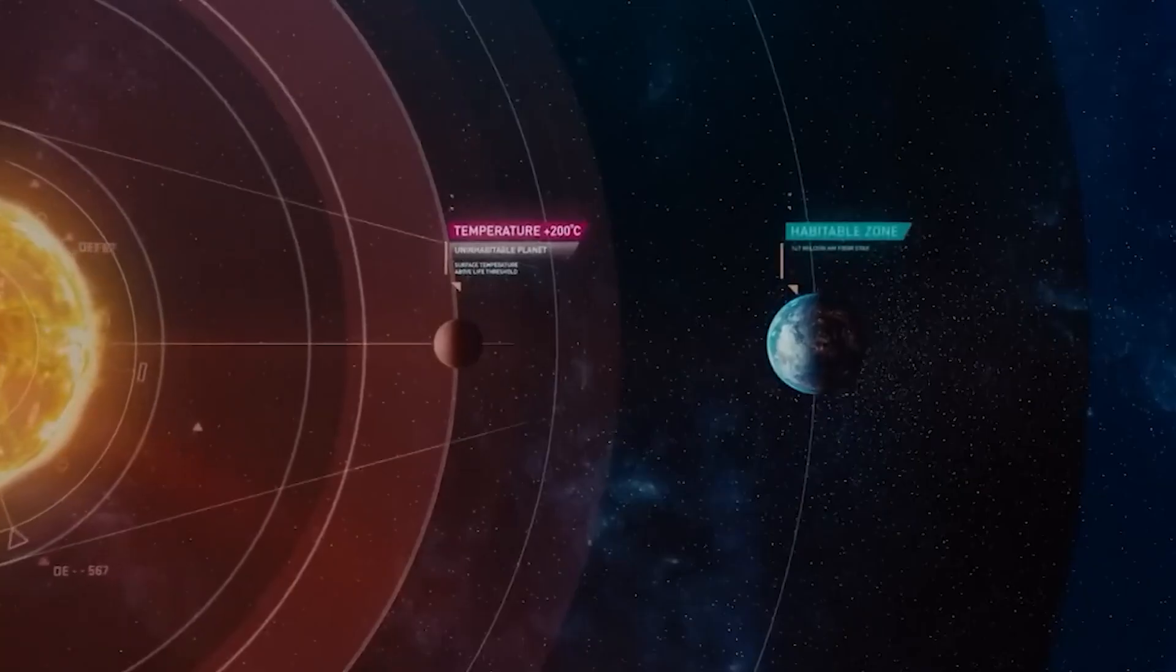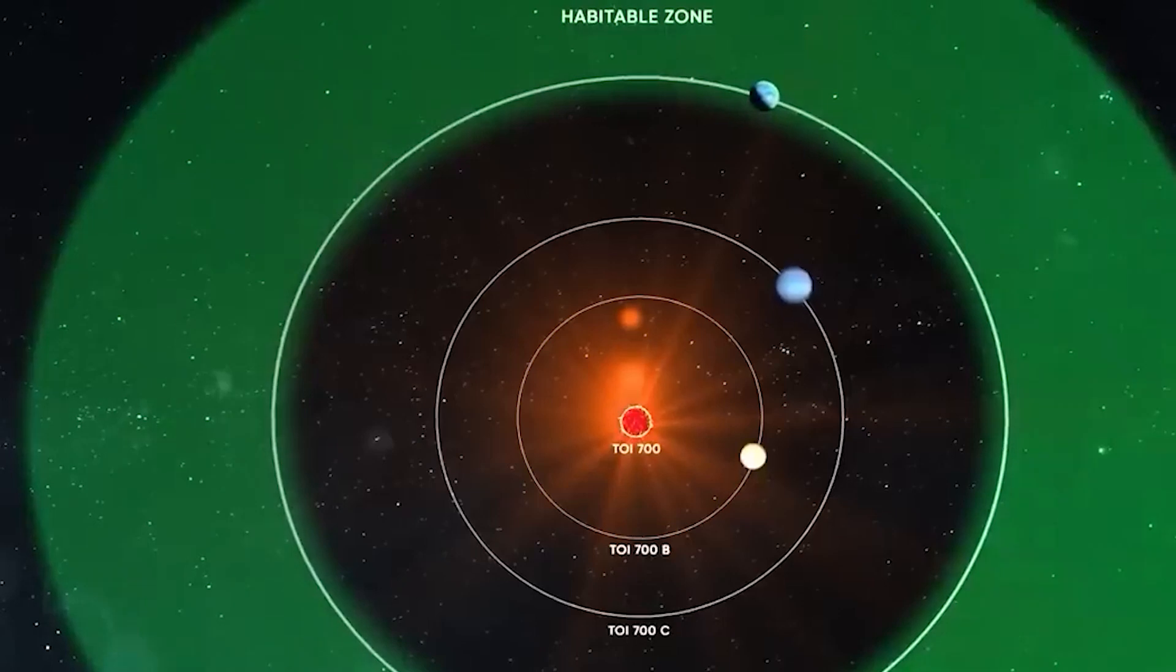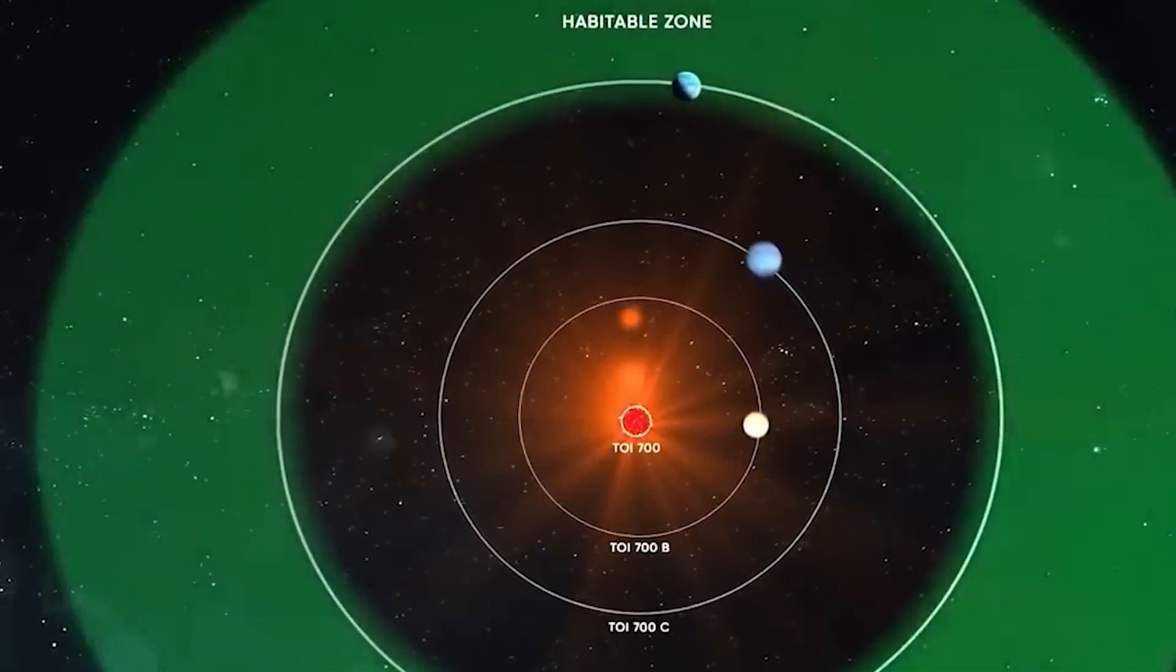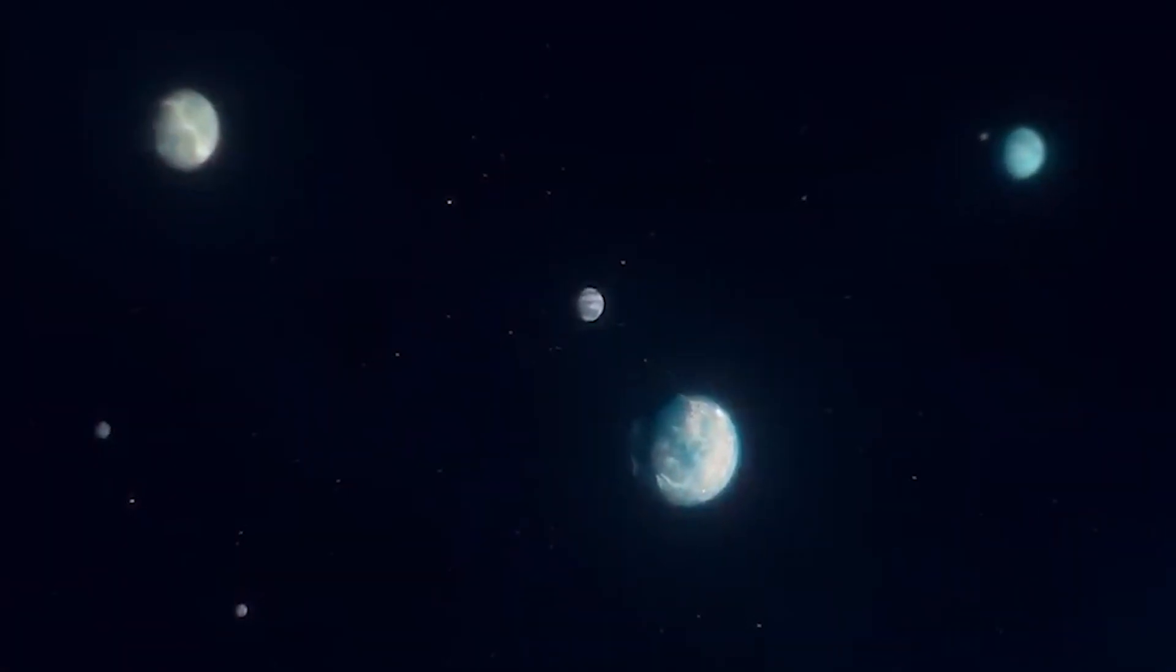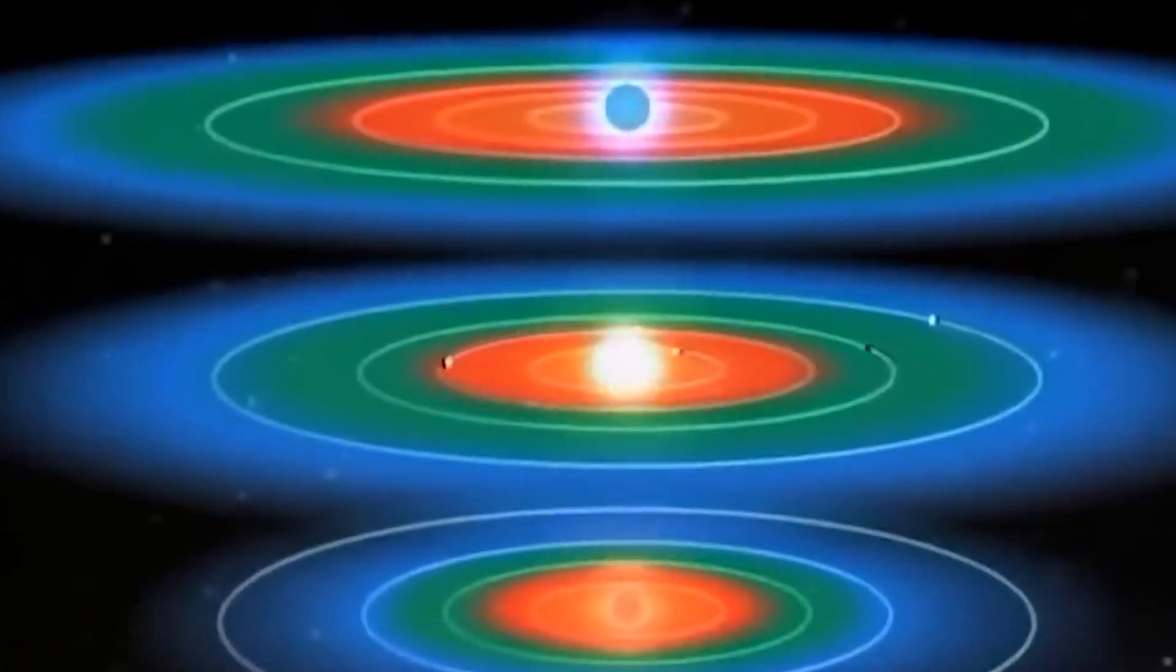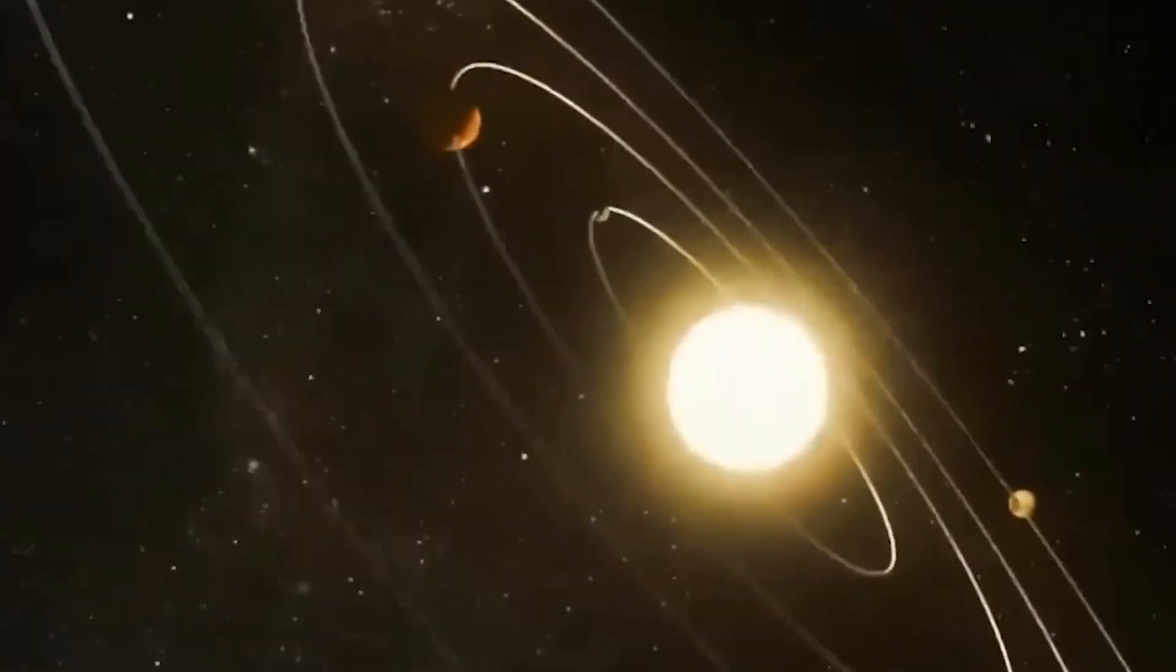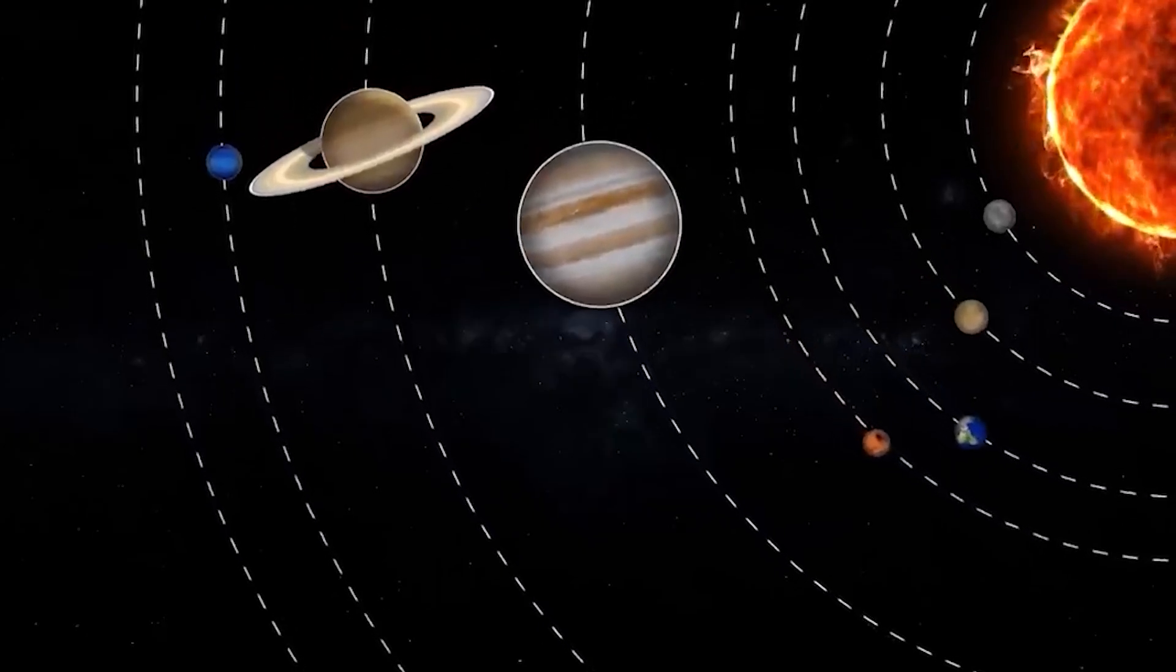One approach is to focus on the habitable zone, a region around a star where the planet can receive enough energy to maintain liquid water on its surface, but not so much that it evaporates or boils away. The habitable zone varies depending on the star's size, temperature, and brightness, as well as the planet's size, composition, and atmosphere.